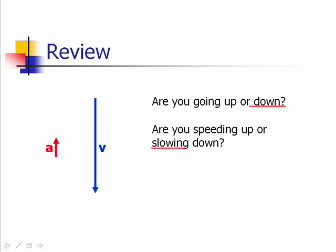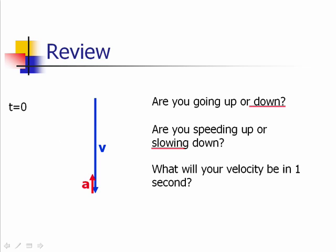We can think of that acceleration vector as how much the velocity vector changes each unit of time that goes by — in other words, what change would I have to add to that velocity vector in the next second of time? So if I were to ask you what that velocity vector is going to look like one second later, I would just add that acceleration vector, and that would shorten my velocity vector.